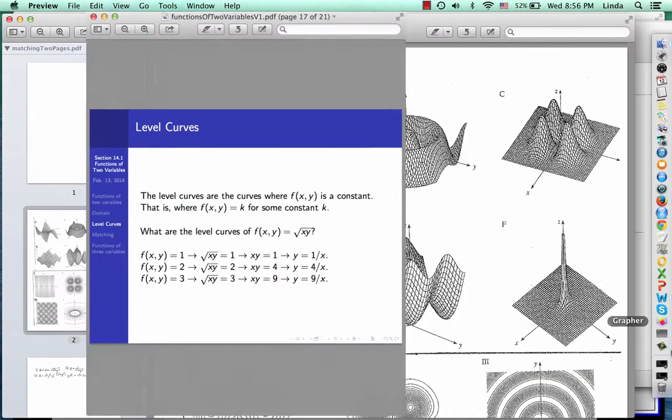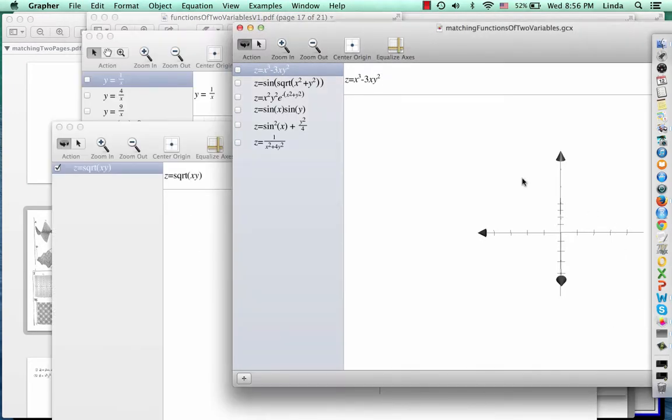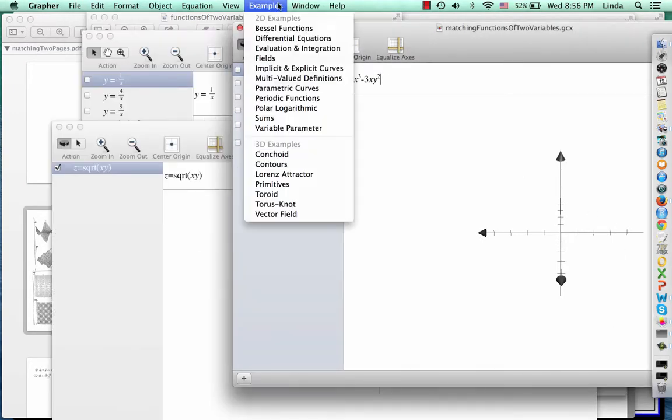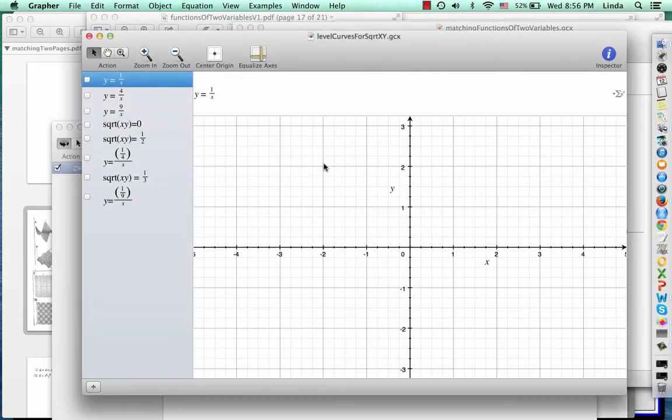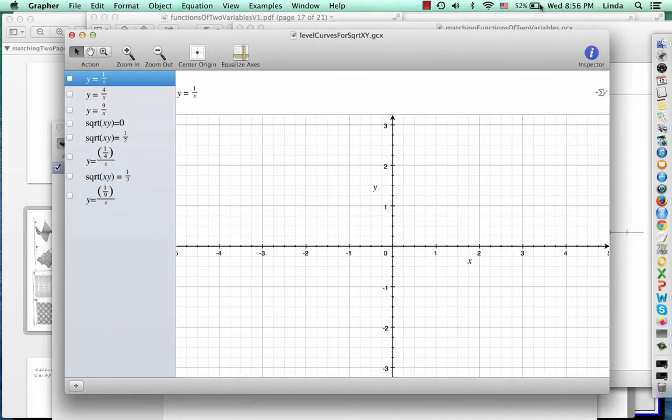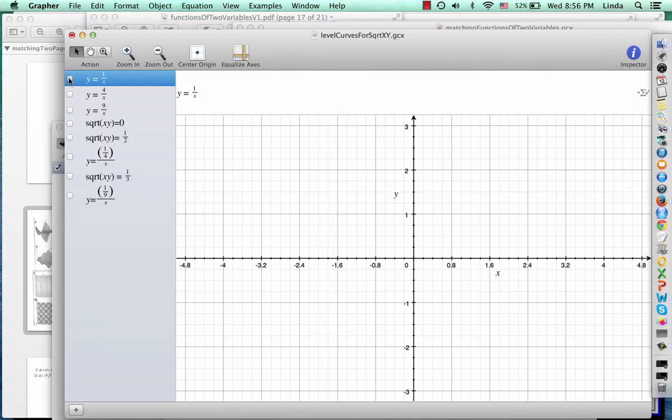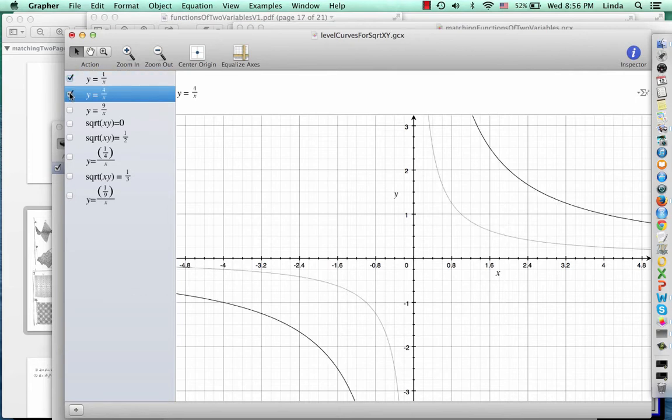So I have my math grapher here. And let me look at my level curves. The first level curve we're talking about where z equals 1. This is a level curve where z equals 2. Here's the level curve where z equals 3. Here's the level curve where my z equals 0.